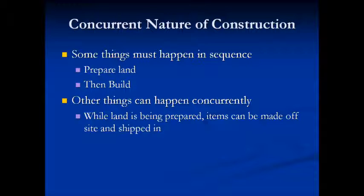Some things have to happen in sequence. You have to prepare the land and then you have to start building. Other things that can happen concurrently include: while the land is being prepared, items can be made off-site and shipped in. Depending on how skilled the general contractor is, fabrication can be occurring while the foundation is being laid. So in looking at the process of how to construct a building, it's important to keep in mind this idea of the concurrent nature of construction.